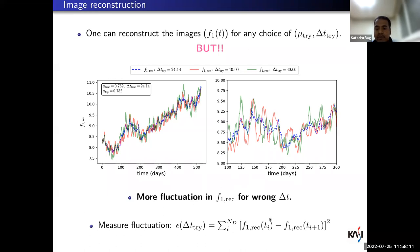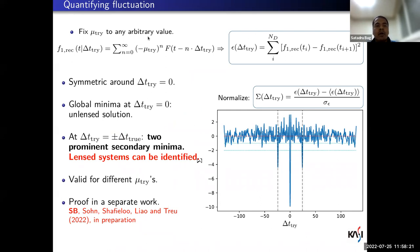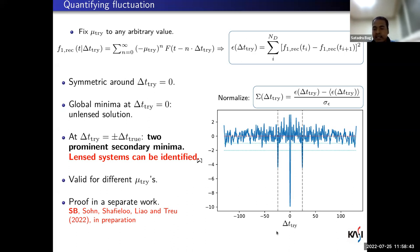In other words, a wrong time delay means the reconstructed image light curve shows more fluctuations than the true one. That is the heart of this analysis. We use a simple metric — the sum of squared distances in the time series — to measure the fluctuations. We construct the whole algorithm: given a joint light curve, fix a trial magnification ratio, reconstruct the image light curve for a bunch of trial time delays, calculate the fluctuations for each, and plot that fluctuation against the trial time delay — we call this the fluctuation curve.